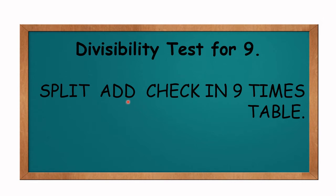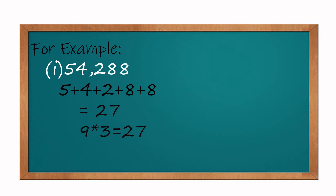Now let's see some examples. 54,288 - if I split and added, I will get 27, which comes in 9 times table as 9 threes are 27, so this number will be divisible by 9. Next, 2,584 - if I split and added, I will get 19, but this 19 will not come in 9 times table, so this number will not be divisible by 9.